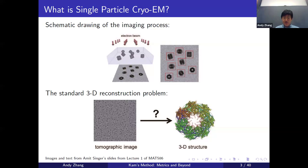Our main problem in cryo-EM is a standard 3D reconstruction problem: given multiple images, we want to solve for a 3D structure. This is similar to computerized tomography, but there are two main differences. In tomography, we know what angle we're taking projections at. Here, when we freeze the protein in ice, it locks the protein in place, but prior to being frozen, we don't know what orientation the protein adopts. So we don't know what viewing angles we're taking projections at — we have to do rotation estimation to find the viewing angles.